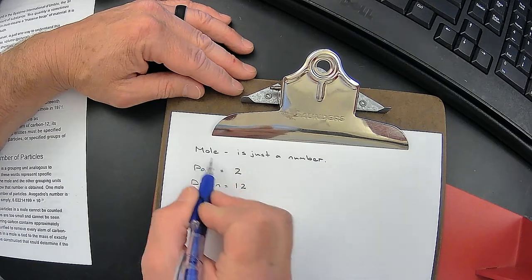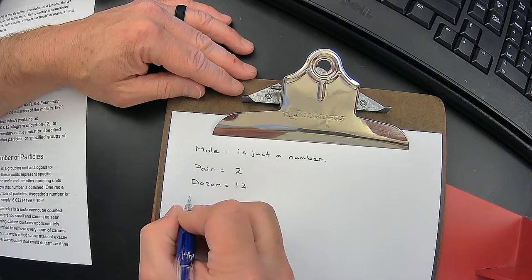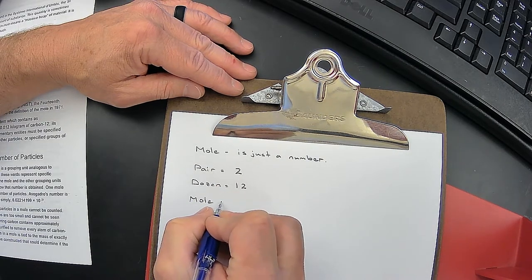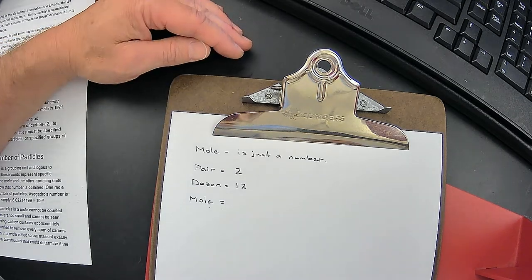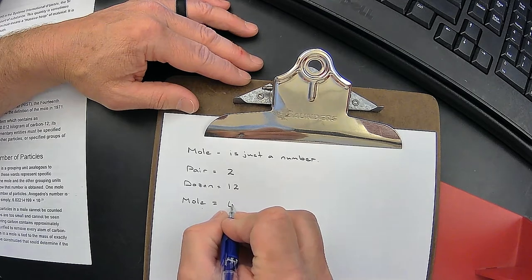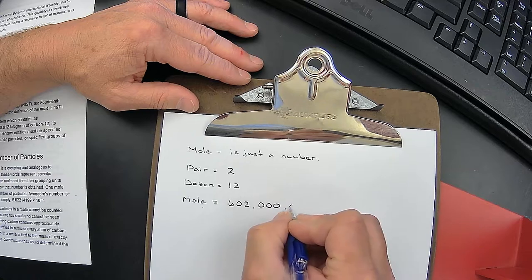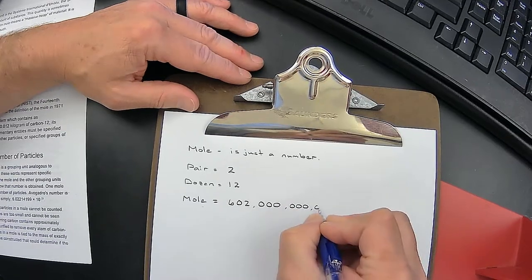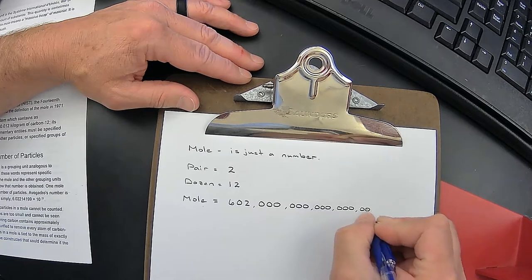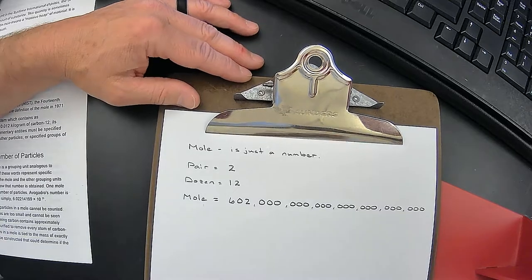We're very familiar with words standing for numbers. Here we also have a word that stands for a number. It turns out that the number the word mole stands for is a very, very large number. I'm going to write it out. So it's 602... There is the number.